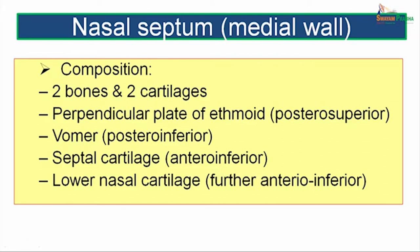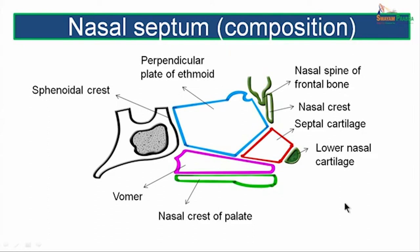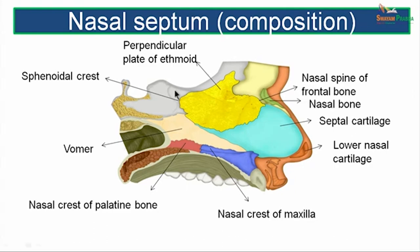The nasal septum or medial wall is composed of two bones and two cartilages. The two bones are the perpendicular plate of the ethmoid bone posterosuperiorly, and the vomer posteroinferiorly. The two cartilages are the septal cartilage anteroinferiorly, and the lower nasal cartilage further anteroinferiorly.